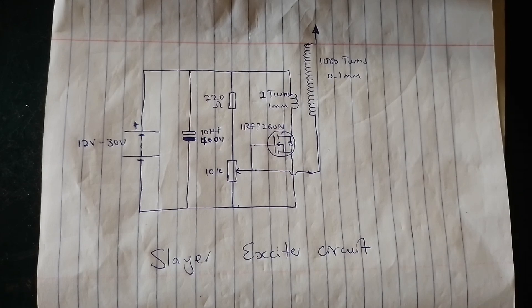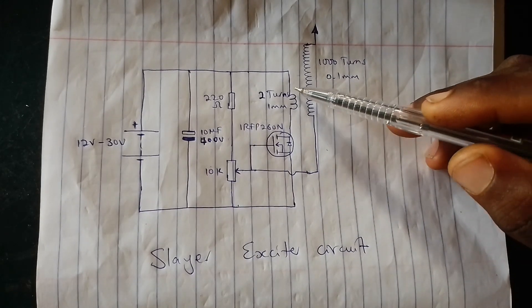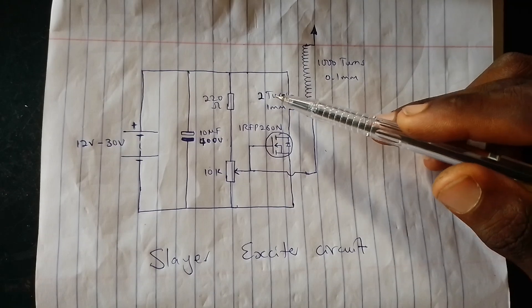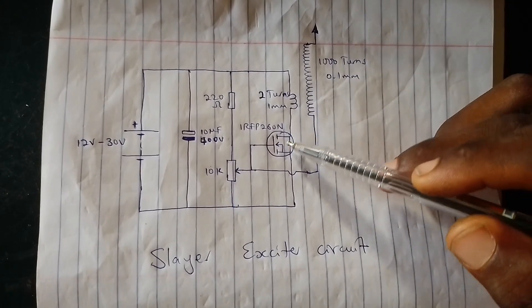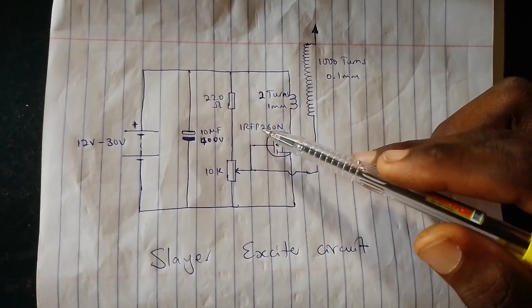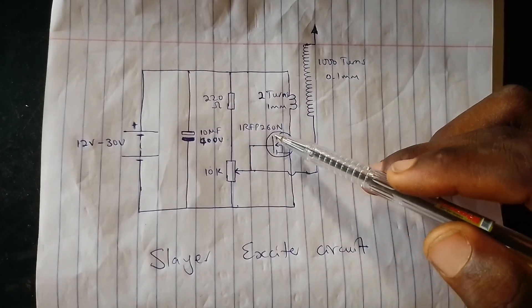So how does the Slayer Exciter work? Now here's the circuit. As you can see, it has a transformer that has a primary coil of about 2 turns and a secondary coil of about 1,000 turns, and is driven by a MOSFET. This is a power MOSFET IRFP260N.